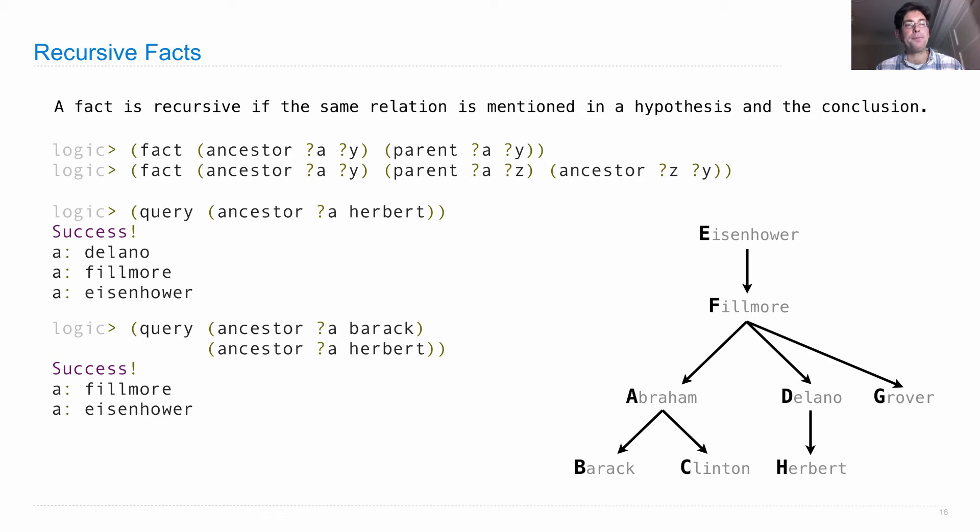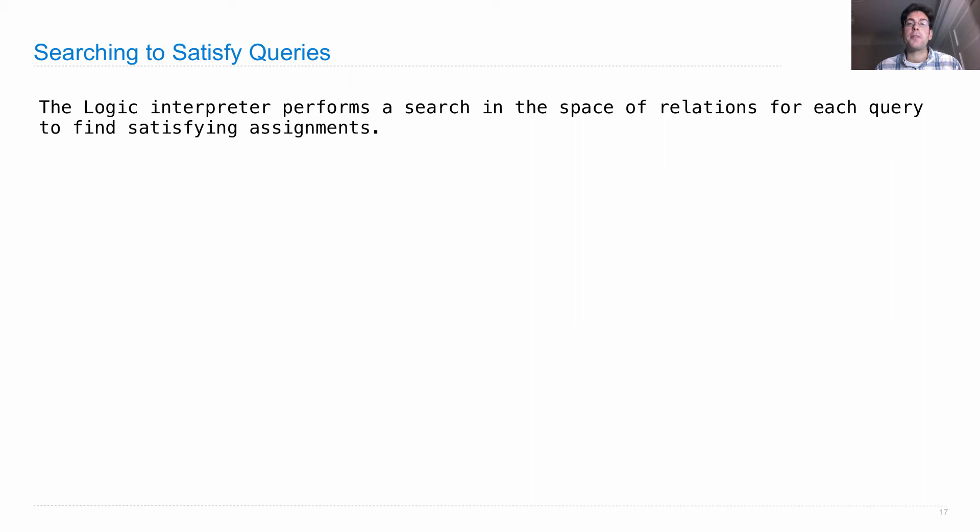So how does this happen? What the logic interpreter is doing is it's running a search over all of the different assignments that it could give to the variables in the query in order to make sure that the query is entirely satisfied. And while it does this, it's going to have to derive new facts based on the compound facts that exist. So the logic interpreter performs a search in the space of all relations for each query in order to find all satisfying assignments to that query.